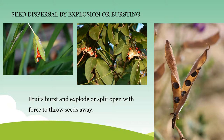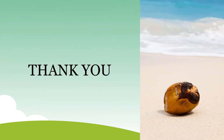In this way, seeds get dispersed with the help of different agents like wind, water, birds, animals, and even humans, to go to a distant place from the parent plant — to avoid competition for food, water, and sunlight, and to get enough space for growth. Thank you, children. Hope you understood the concept well.